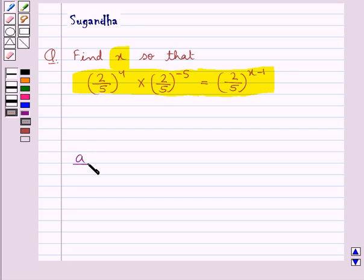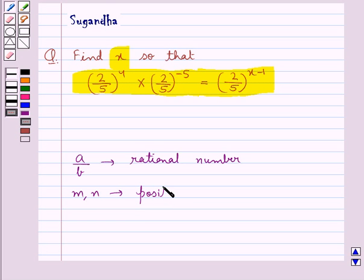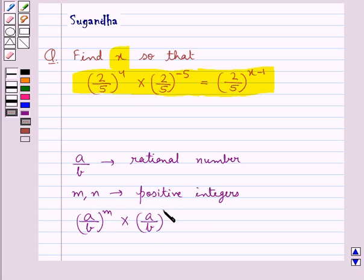Now, if we are given a rational number a upon b, and m and n are positive integers, then a upon b to the power m, multiplied by a upon b to the power n, is equal to a upon b to the power m plus n. This is the key idea for this question.